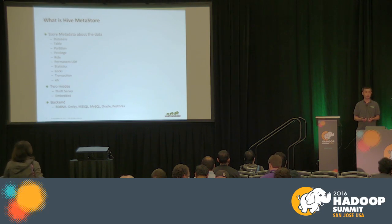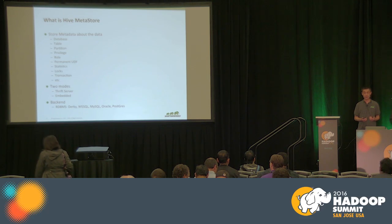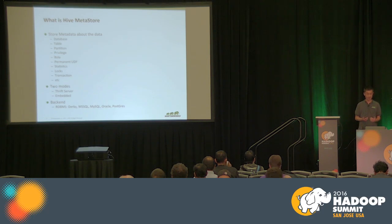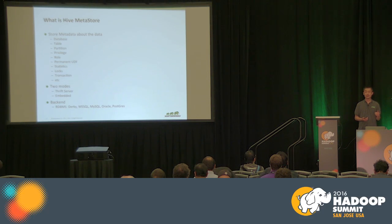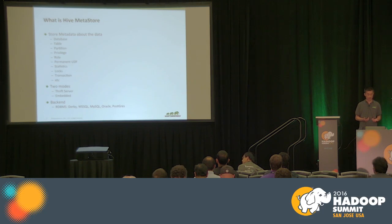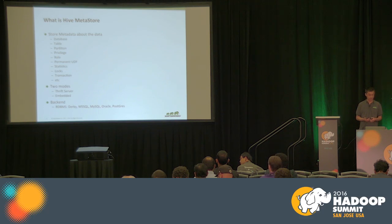Hive Metastore can run in two modes. One is server mode, which is a standalone server that can serve multiple clients simultaneously. The other mode is called embedded mode, which runs in the process of the client and works as a library. Currently, Hive Metastore supports RDBMS as the backend — specifically five popular ones: Derby, MSSQL, MySQL, Oracle, and Postgres.